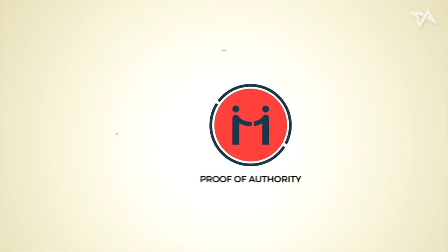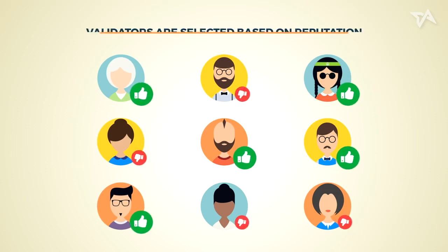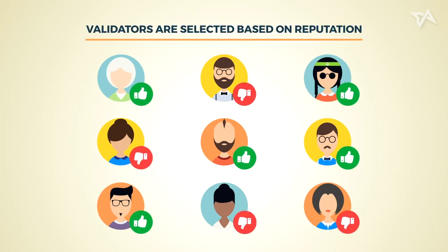Lastly, proof-of-authority. A modified form of proof-of-stake. Here, only approved parties selected based on their reputation can become validators.